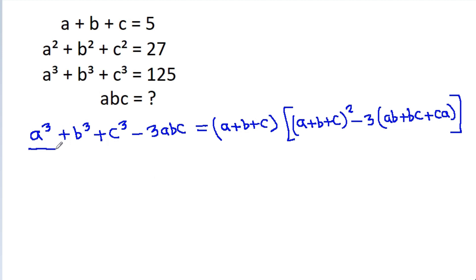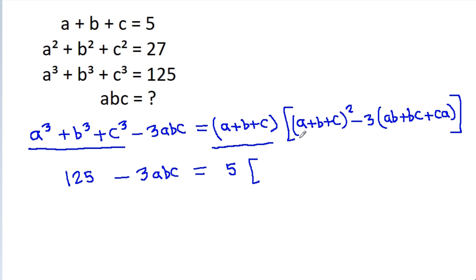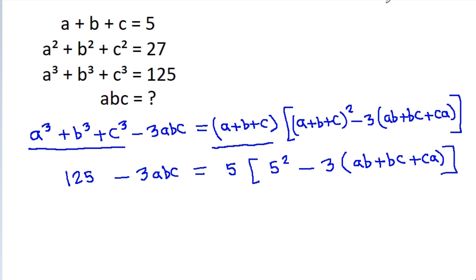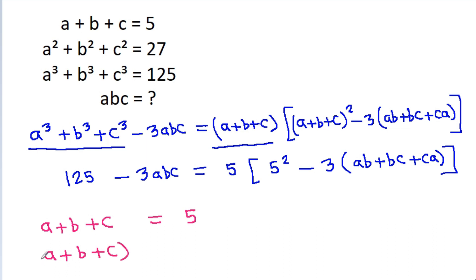And a cube plus b cube plus c cube is 125, minus 3abc is equal to a plus b plus c is 5, times a plus b plus c whole square minus 3 times ab plus bc. And if we square both sides, then a plus b plus c whole square will be equal to 25.